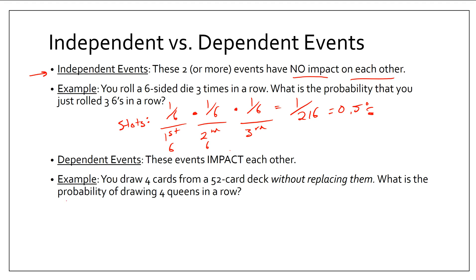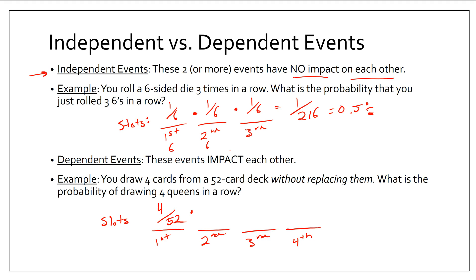For this problem, I'm looking at the probability of drawing four queens in a row. I'm going to think of this in terms of slots. The first slot is the first draw, the second slot is the second card, the third is the third card, and the fourth is the fourth card. I know there are four queens in a deck, so the probability of drawing a queen on the first draw is four out of 52. On the second draw, since I picked out a card, I only have 51 cards left. Since I picked a queen, there are only three queens left. Not only is there one less card, but also one less queen. These are therefore dependent events because each probability is different — they've impacted each other.